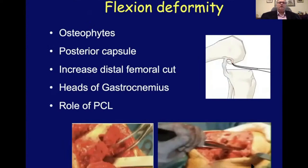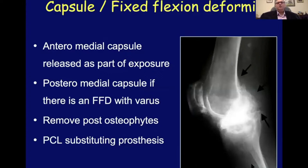Flexion deformity is seen fairly commonly. The commonest offending structures are the osteophytes and the posterior capsule. One should not resort to an increased distal femoral cut unless everything else has been addressed and you've confirmed it cannot be corrected otherwise. You need to look back and see whether your cut was inadequate in the first place. Releasing the heads of the gastrocnemius and the role of the posterior cruciate ligament needs to be appreciated — these should be done only as a last resort, perhaps only in severe cases. The anteromedial capsule is released as part of the exposure; the posteromedial capsule needs to be released if there is persistent varus and fixed flexion deformity, but only after posterior osteophytes have been removed.